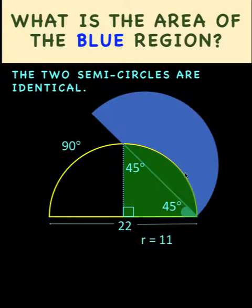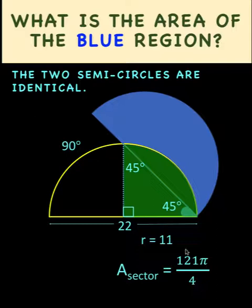So if the radius of the quarter circle is 11 units, then we can easily find the area of this green sector. The area of this green sector must be pi r squared divided by 4, where r is 11. So pi times 11 squared is 121 pi and divide it by 4 to get the area of the quarter circle.